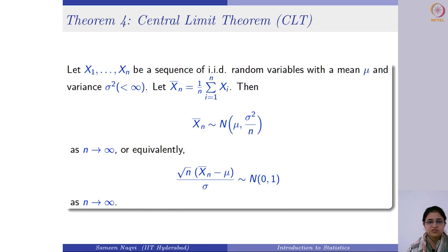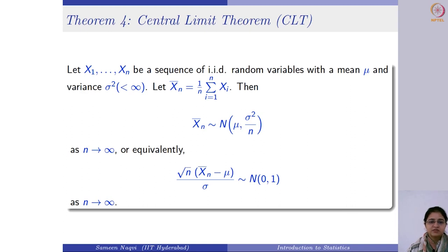The Central Limit Theorem says that if you draw a sample from a population, note down its mean, and repeatedly take samples and plot their sample means, the resulting distribution will be normal — no matter what the original population was, even if it is skewed. This holds provided the sample size approaches infinity.